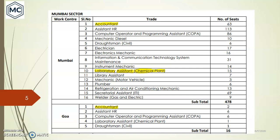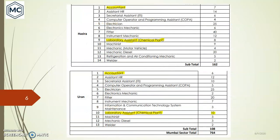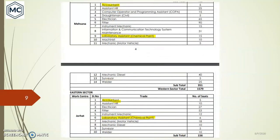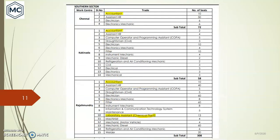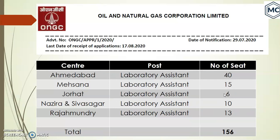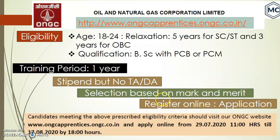The posts mentioned include accountant, laboratory assistant, and assistant HR. These are posts that degree students from arts and science colleges can apply for. You can see the number of seats for candidates from various streams. For chemistry, I found many centers, and in total, 156 seats are available as laboratory assistant.